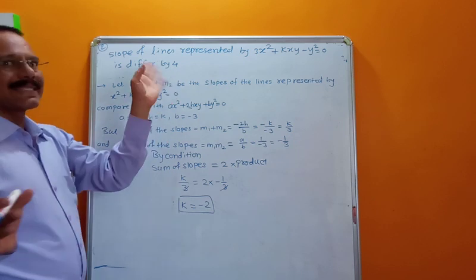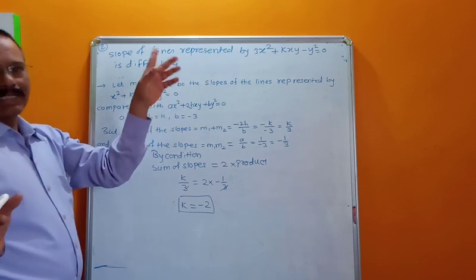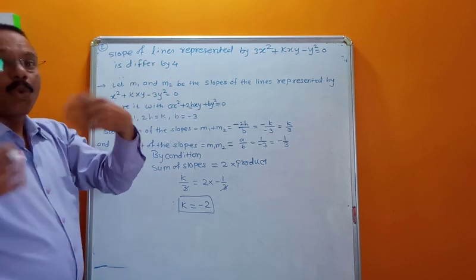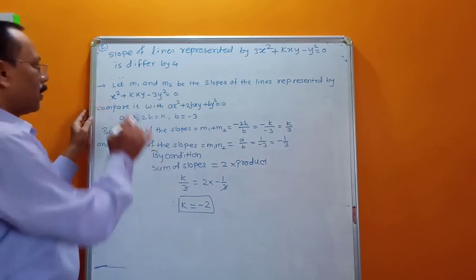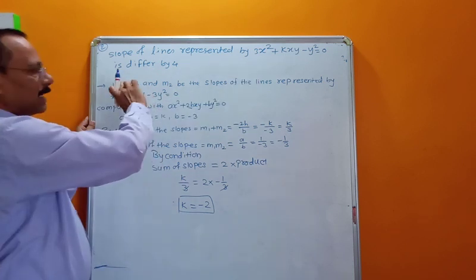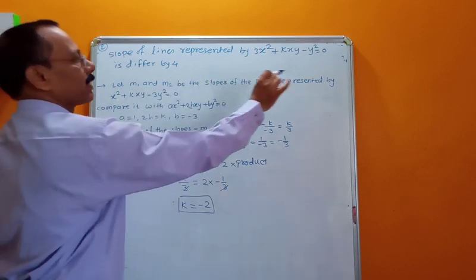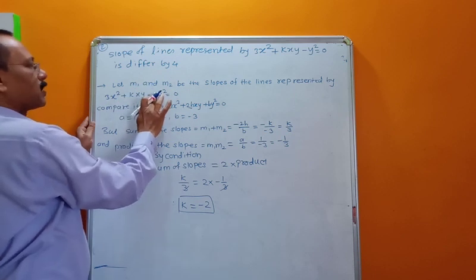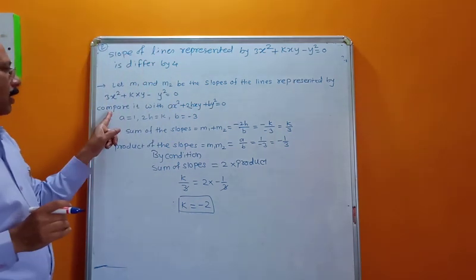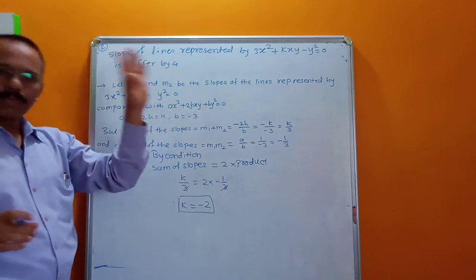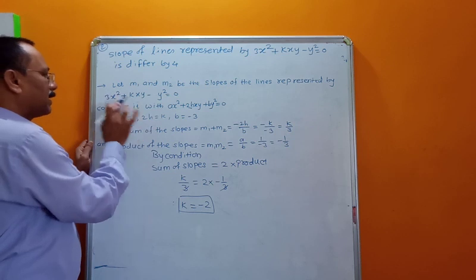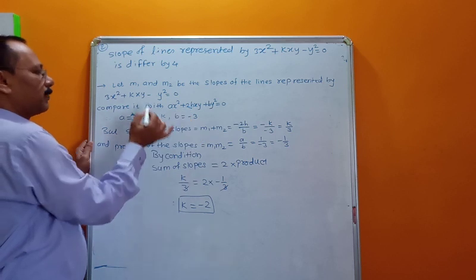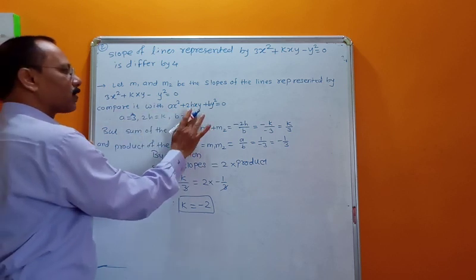If they say 'exceeds by', that also means m1 − m2 = 4. Now let m1 and m2 be the slopes of the lines represented by 3x² + kxy − y² = 0, and compare with ax² + 2hxy + by² = 0. So a = 3, 2h = k, and b = −1.